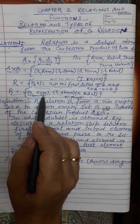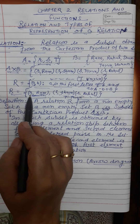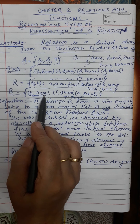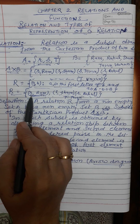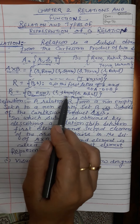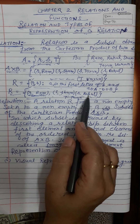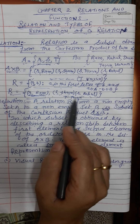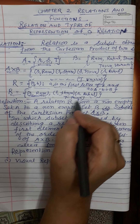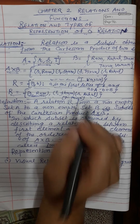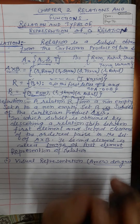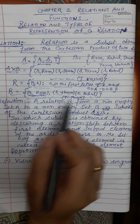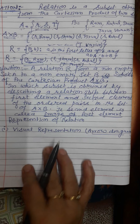Now, the second element is called the image of the first element. Shyam is the image of S, Rahul is the image of R, Tarun is the image of T. So the second element is called the image of the first element.